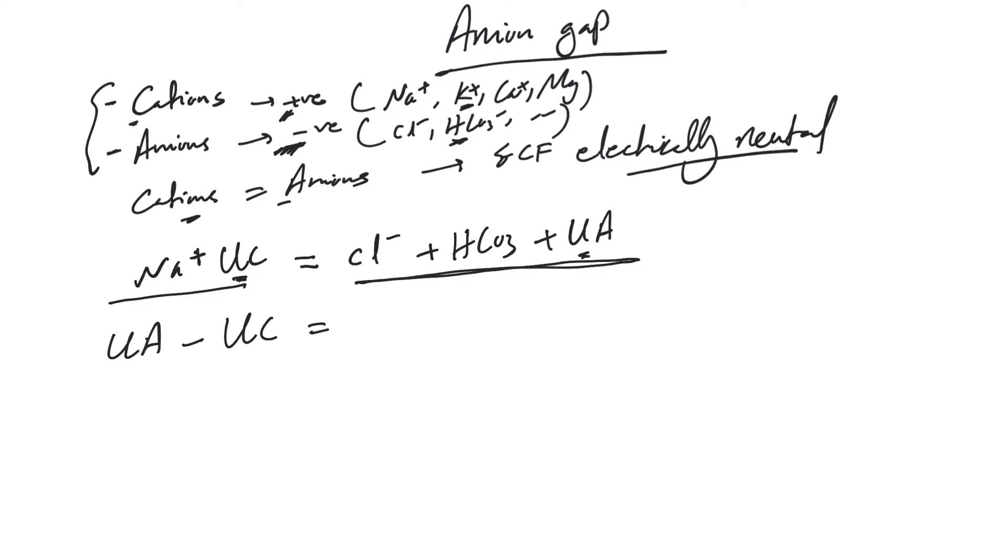It's the same equation, we just rearranged things. The difference between unmeasured anions and unmeasured cations we're going to call anion gap. So anion gap equals sodium minus the sum of bicarb and chloride. The normal range for this depends on the lab and standard deviations, 2 to 12.